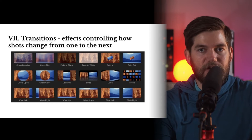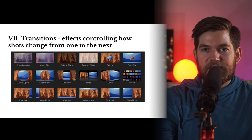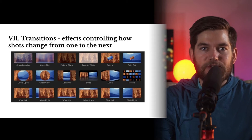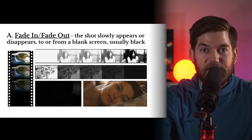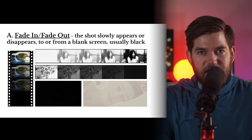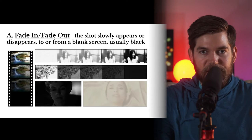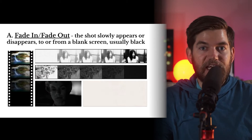This brings us to our first vocabulary term for this lesson: transitions. Transitions are effects controlling how a shot changes from one to the next. Here you can see some transitions available to an editor using Final Cut Pro. One of the earliest transitions was the fade-in and fade-out, and it's still very popular today — probably the most popular transition. In a fade-in or fade-out, the shot slowly appears or disappears to or from a blank screen.